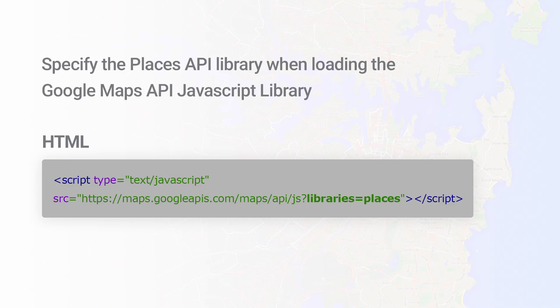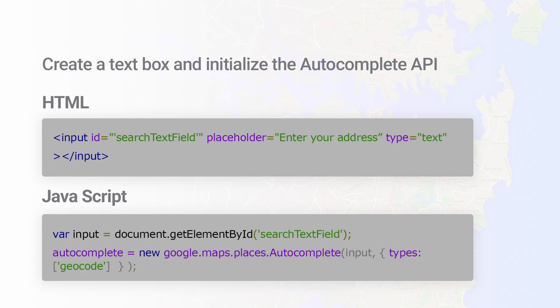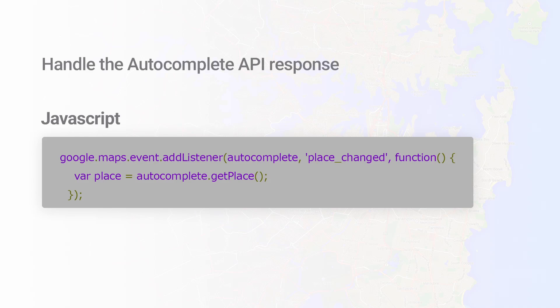Including Autocomplete in your application is as easy as these three steps. Step one: be sure to include the Places library when loading the JavaScript API. Step two: create a text box and instantiate the Autocomplete service. Step three: create an event to capture the results.